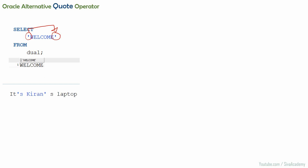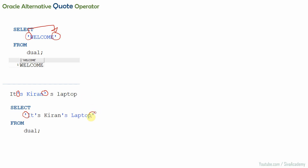But what if there is a string something like 'it's Kiran's laptop'? Now if you see, there is a single quote here and also a single quote here as part of the string we are going to select. We don't want to consider these as delimiters — instead they should be part of the string. If we try to enclose this within single quotes, Oracle will interpret the first apostrophe as the end of the string, so it will throw an error.